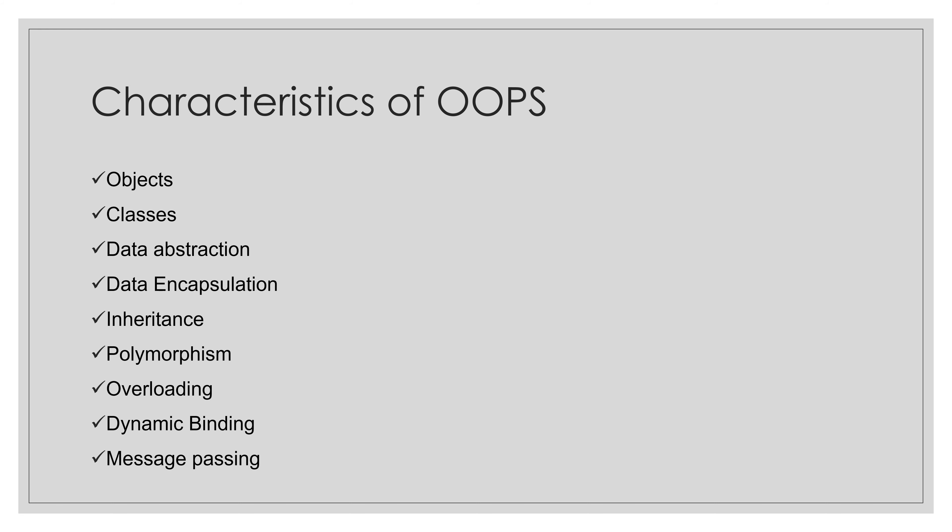What is data abstraction? Data abstraction is hiding the inner or background details from the user. For example, when buying a car in a showroom, we look at features like diesel or petrol, mileage, or dual front airbags, but we are not concerned about how the car is manufactured and integrated. The manufacturing details are hidden from the buyer — this is called data abstraction.